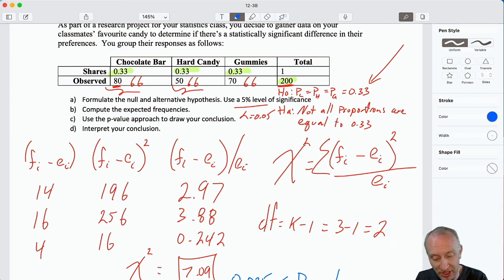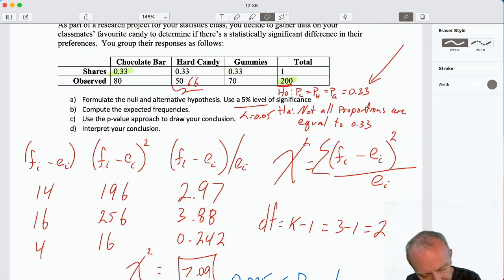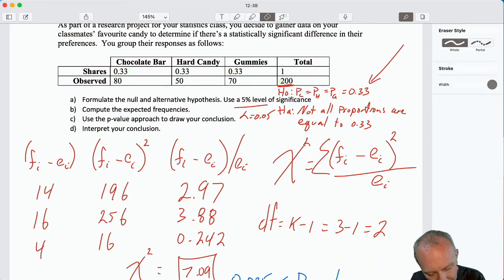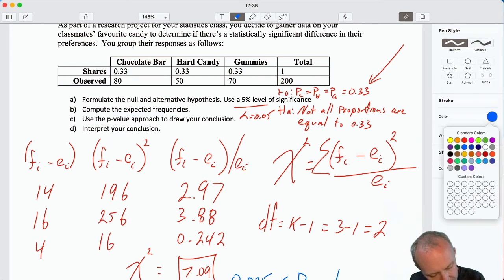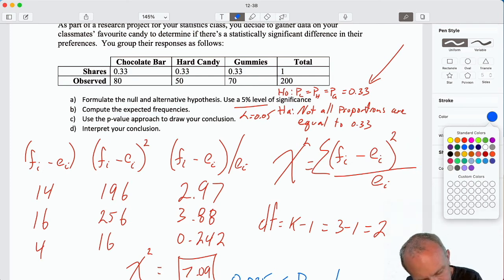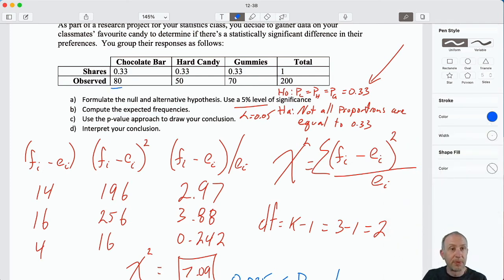So we can fairly easily do a quick little bar chart and compare these proportions. So once more, if we calculate our point estimates, and so here I'm going to say for those who said they preferred the chocolate bar that was 80 out of 200.